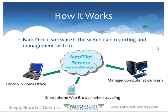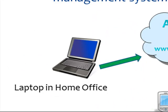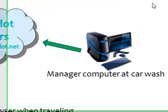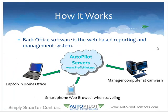The beauty of the back office software is that it is a completely web-based system. All data is stored on the centralized Autopilot servers. This means that you can access your data from a laptop that might be in your home office, your smartphone if you're on the road traveling, or maybe the manager's computer at the car wash. It doesn't matter where you are — all that matters is that you have some type of device with internet access that you can open up the www.profitpilot.net website.